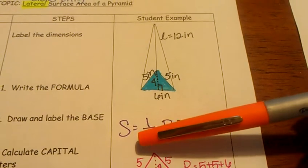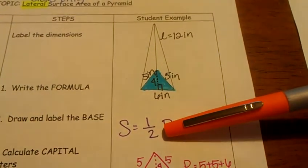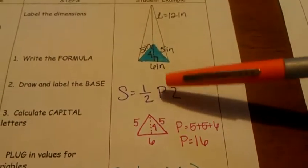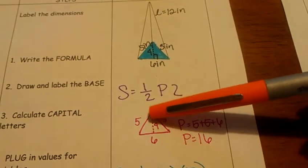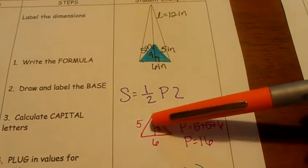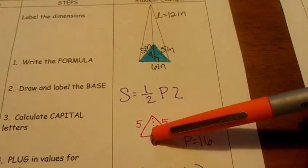Write the formula. S is equal to one half perimeter of the base times your slant height. Step 2. Draw and label your base. My base is a triangle. So I've got a side of 5, a side of 5, a side of 6.